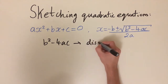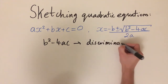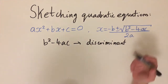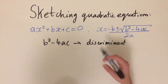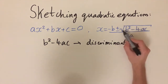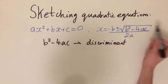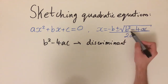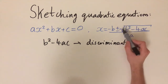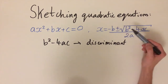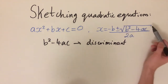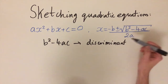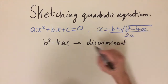The discriminant essentially discriminates between what type of solutions and how many solutions we're going to get, determining what the graph looks like. If it's positive, we get plus or minus the square root of a positive number — two solutions. If it's zero, plus or minus zero gives one solution. If it's negative, we have the square root of a negative number — no real solutions, meaning the graph never crosses the x-axis.